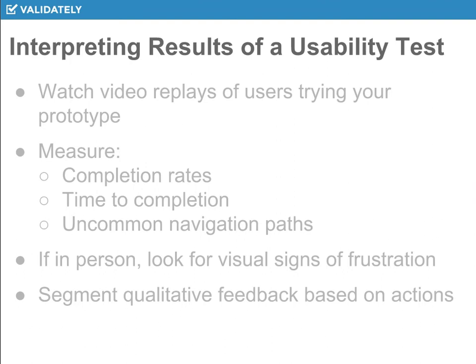You want to look at that qualitative feedback very differently. You don't want to throw the baby out with the bathwater. Make sure that if the issue is a usability issue, and you can find the one spot where those two people got confused, then by looking at the answers from the three people who got through it, you can see that you're on the right path. Separate qualitative feedback based on user actions, and use software that easily lets you do that.